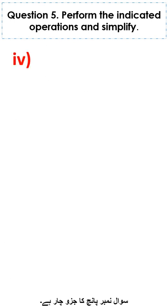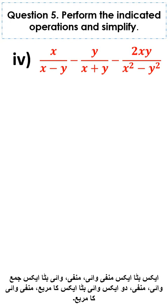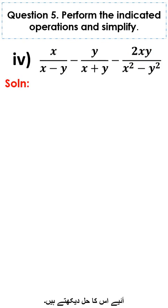Part 4 of question number 5 is x divided by x minus y, minus y divided by x plus y, minus 2xy divided by x square minus y square. Let's see its solution.